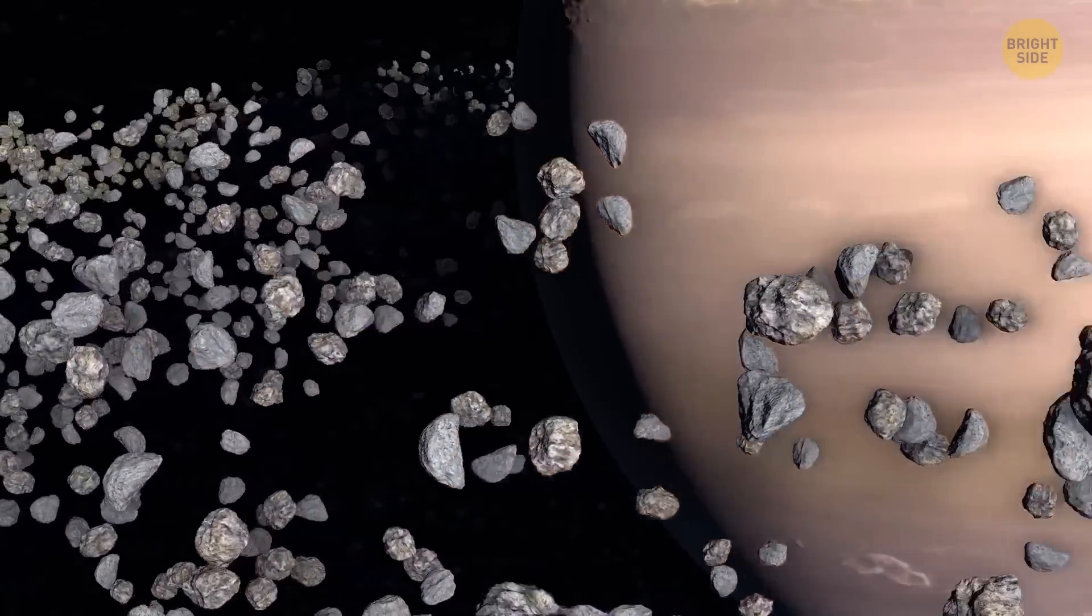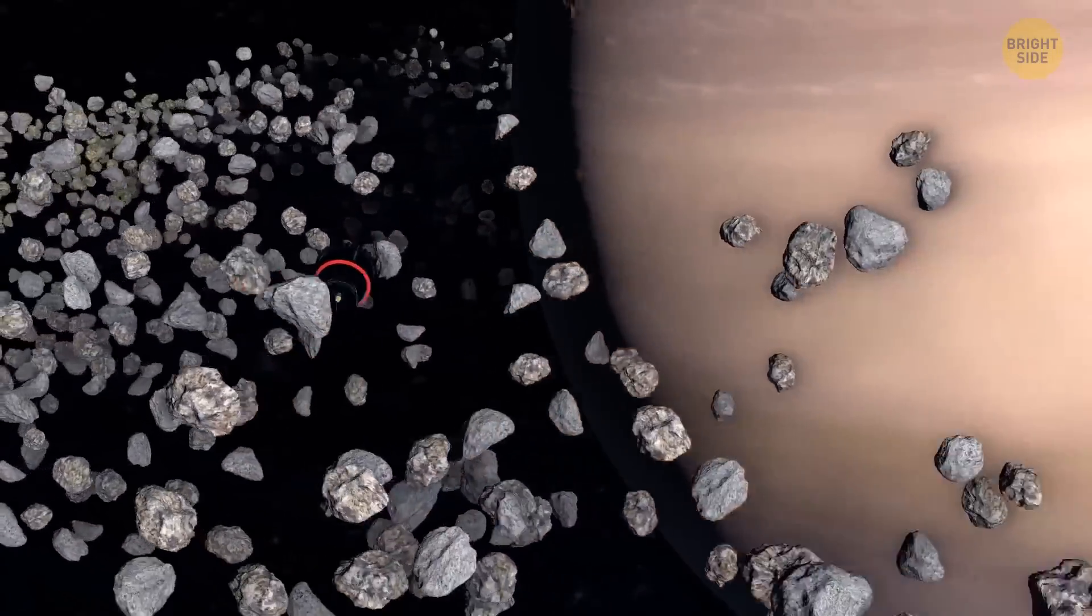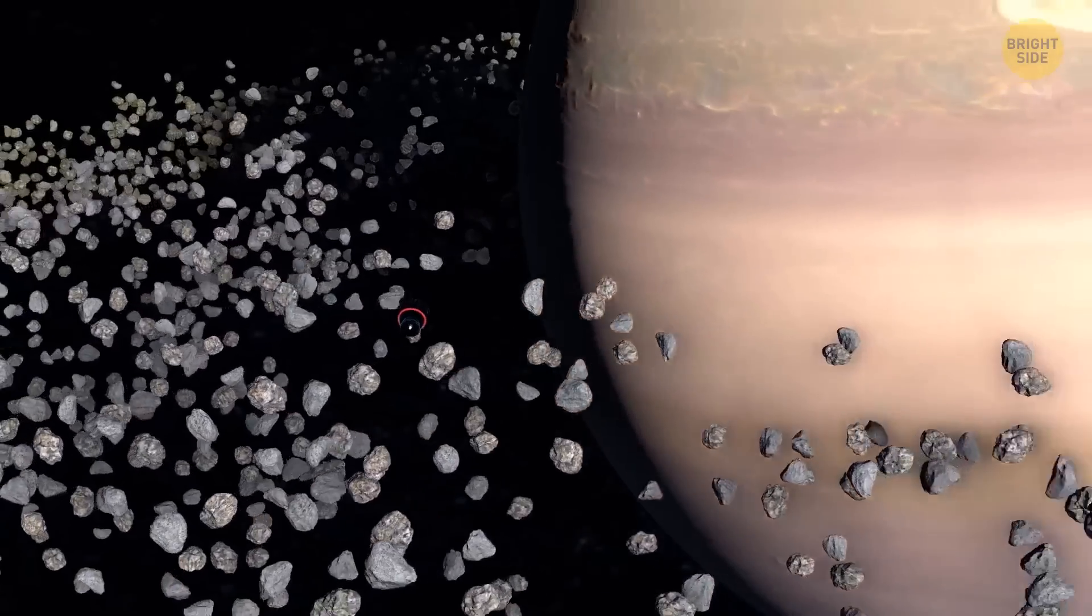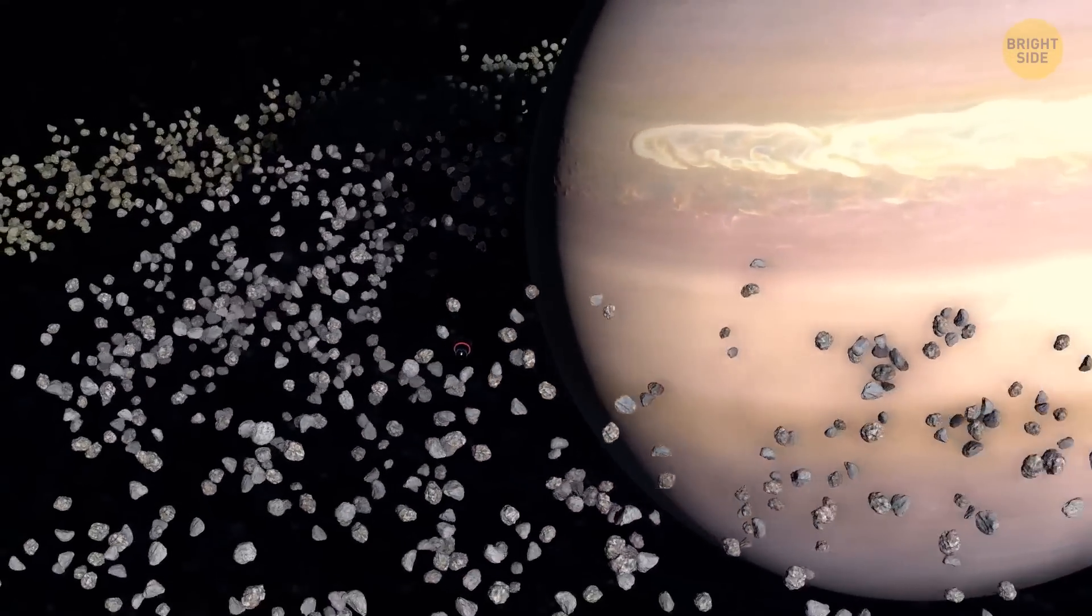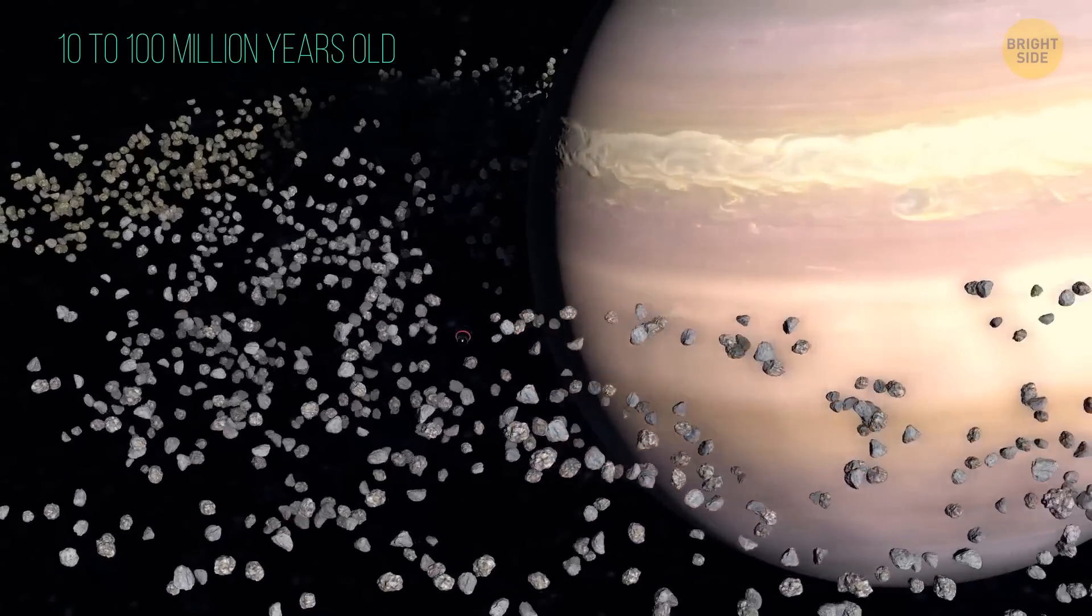Using Cassini's final plunge into the planet, researchers could estimate the ring's mass, 33 billion billion pounds. They have determined that the rings were between 10 to 100 million years old, much younger than the planet itself.